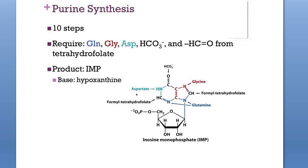Purines are not synthesized as such in the body; they are formed as ribonucleotides and are built upon the pre-existing ribose-5-phosphate. Ribose is a pentose sugar obtained from the HMP pathway in carbohydrate metabolism. The major site for this biosynthesis is the liver, where nucleotide synthesis takes place. Erythrocytes, leukocytes — mainly polymorphonuclear leukocytes — and brain cannot produce purines, so they are dependent on the liver for their supply.